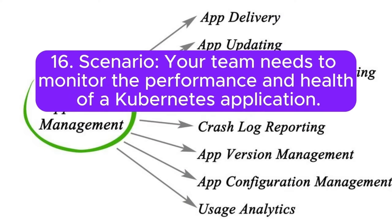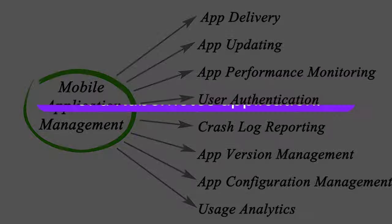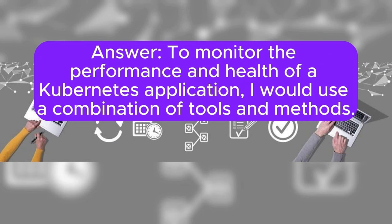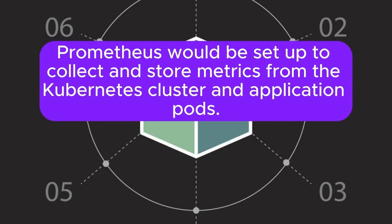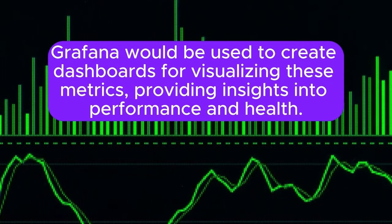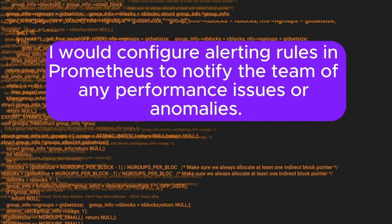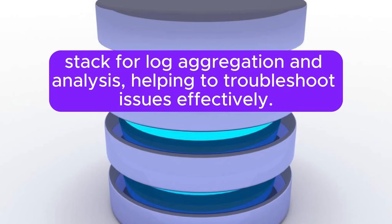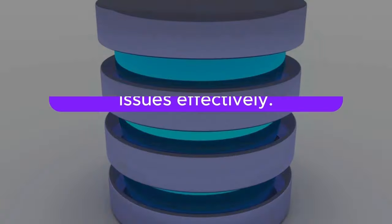Scenario 16: Your team needs to monitor the performance and health of a Kubernetes application. What tools and methods would you use? Answer: To monitor the performance and health of a Kubernetes application, I would use a combination of tools. Prometheus would be set up to collect and store metrics from the Kubernetes cluster and application pods. Grafana would be used to create dashboards for visualizing these metrics. I would configure alerting rules in Prometheus to notify the team of any performance issues or anomalies. Additionally, I would use the EFK stack (Elasticsearch, Fluentd, Kibana) for log aggregation and analysis.